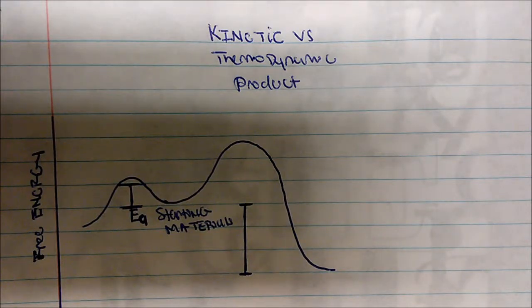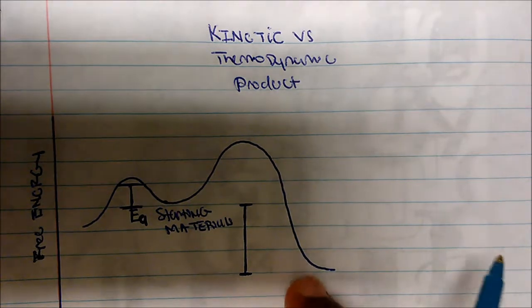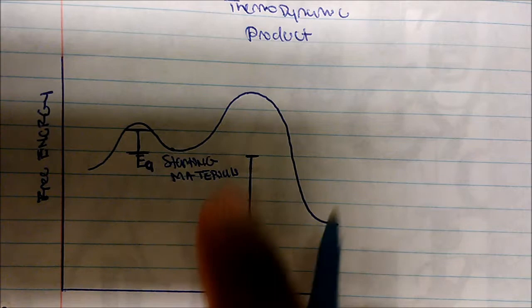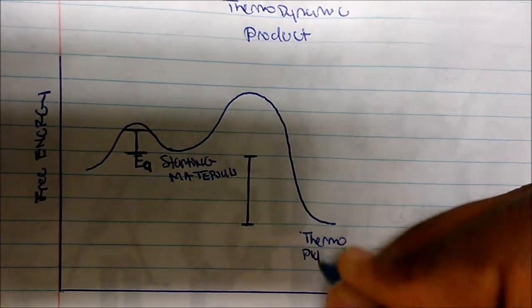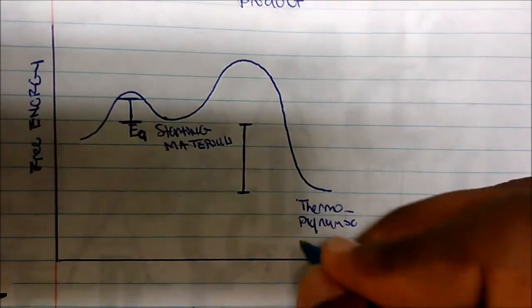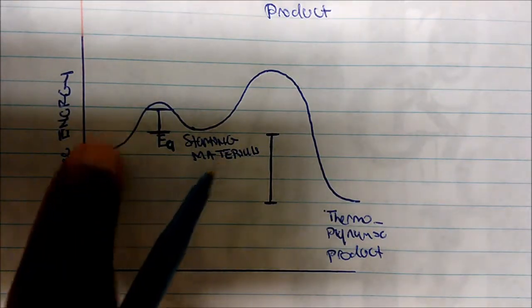In this video, we're going to talk about the kinetic versus thermodynamic product. We're also going to look at the energy diagram, and we need to know how to label which one is your kinetic and which is your thermodynamic product. The one with the higher activation energy will actually be your thermodynamic product, and the one with the lower activation energy — usually at the top — will be your kinetic product.